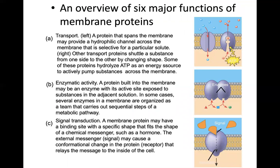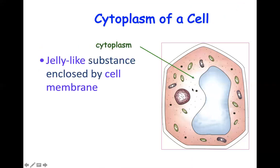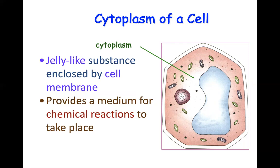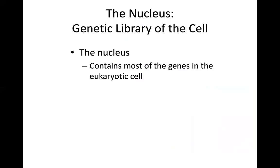The details of the cytoplasm and membrane will be explained in a separate video. Moving to the cytoplasm of the cell — it is the ground of the cell. It is everything outside the nucleus and inside the membrane — a jelly-like substance enclosed by the cell membrane. It provides a medium for chemical reactions to take place, so this is where the biochemistry of the cell occurs. It contains the organelles, which each carry out a specific job, and it is found in all kinds of cells, whether prokaryotic or eukaryotic.